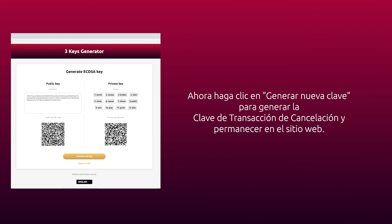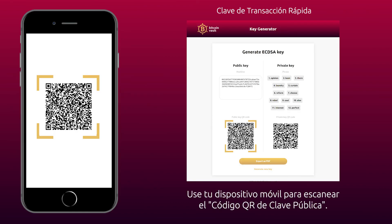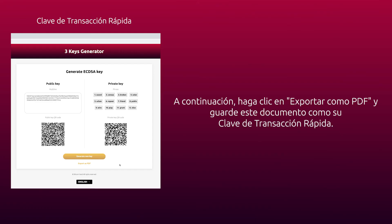Now click Generate New Key to generate the cancel transaction key and stay on the website. Tap Scan on the GoldWallet mobile app. Use your mobile device to scan the public key QR code. Next, click Export as PDF and save this document as a fast transaction key.